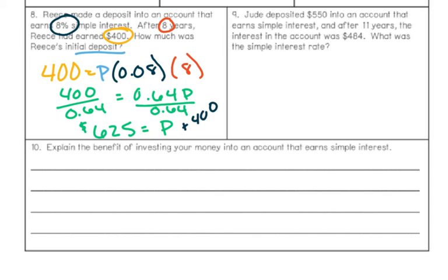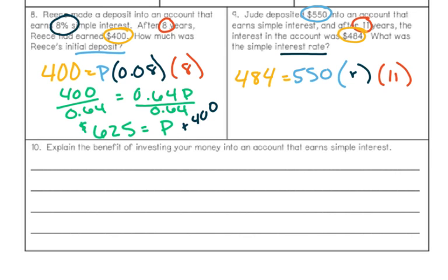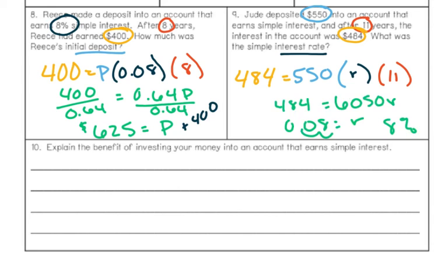Pause the video and try this next problem on your own, then press play when you're ready to check. Jude deposited $550 into an account that earned simple interest, and after 11 years the interest in the account was $484. What was the simple interest rate? Using the same formula, I substitute in the pieces I know and solve for R. I get 0.08, but since we're looking for the interest rate as a percent, I move the decimal two places to the right: the interest rate is 8%.